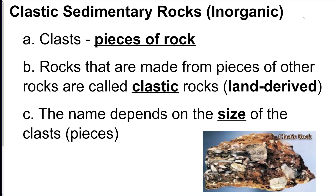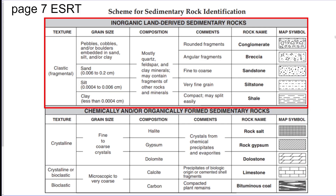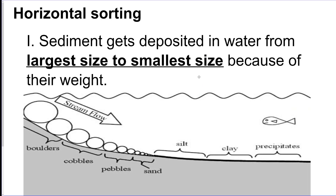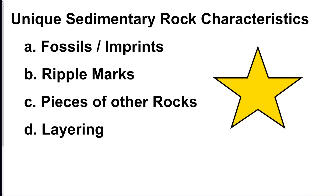Sedimentary rocks: if a rock is clastic, it's made of pieces of other rocks, and it's named by the size of the clasts. In order of grain size: conglomerate, breccia, sandstone, siltstone, shale — all in the reference table. Horizontal sorting means when a river deposits into a lake or ocean, it drops the biggest particles first, then medium, then small particles travel furthest because they weigh less. Sedimentary rock characteristics to memorize: fossils and imprints, ripple marks, pieces of other rocks, and layering.